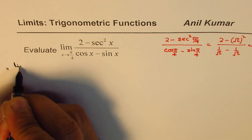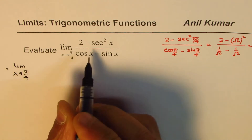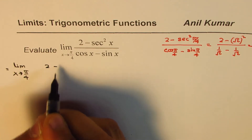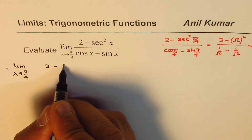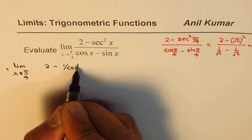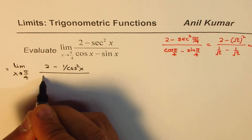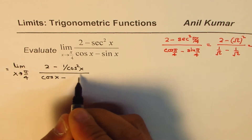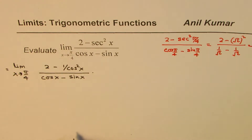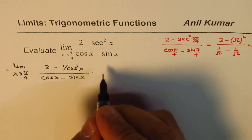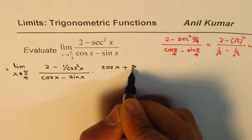We write this as limit x approaches pi by 4. The numerator is written as 2 minus 1 over cos squared x — that is secant squared x — divided by cos x minus sin x. We will rationalize by multiplying and dividing by cos x plus sin x.